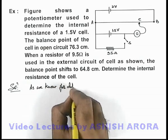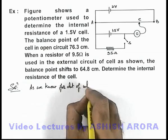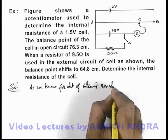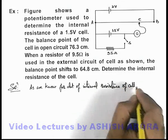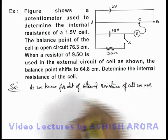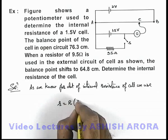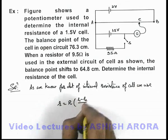For determination of internal resistance of cell we use: this internal resistance can be written as external resistance multiplied by l1 minus l2 by l2.